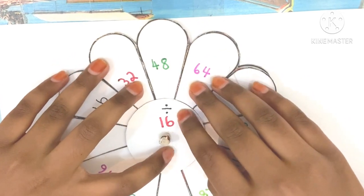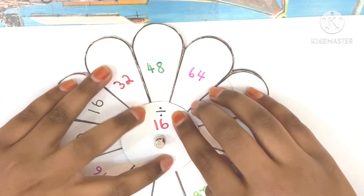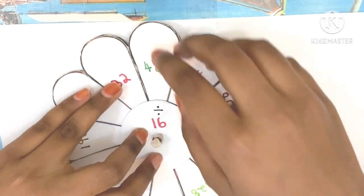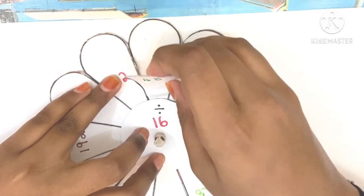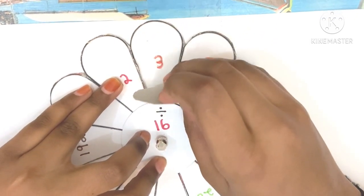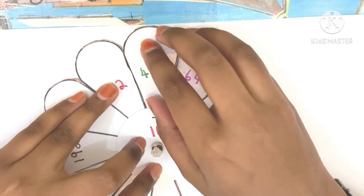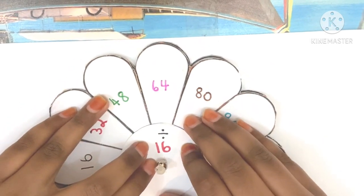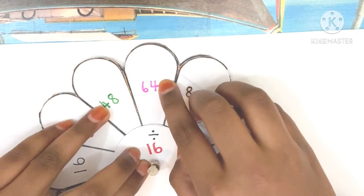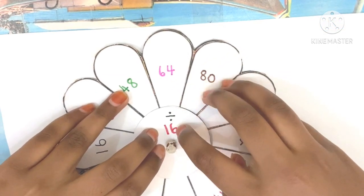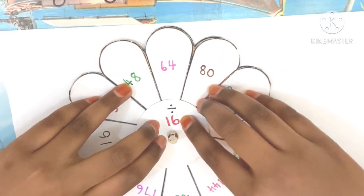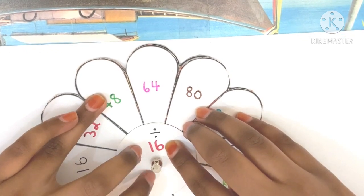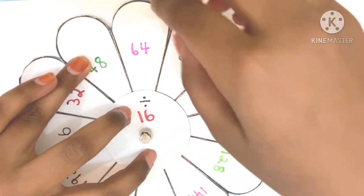Now, 48 divided by 16, what would be the answer? It is 3. Now, 64 divided by 16 — I guess the answer is 4. Let's check whether it is 4 in our division wheel.